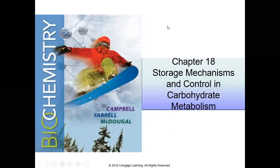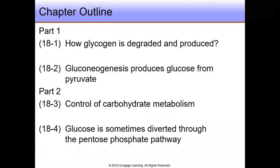Asalaamu Alaikum. Today we want to talk about Chapter 18, Storage Mechanisms and Control in Carbohydrate Metabolism. It will be in two parts. In part one, we'll talk about how glycogen is degraded and produced, and then gluconeogenesis produces glucose from pyruvate.